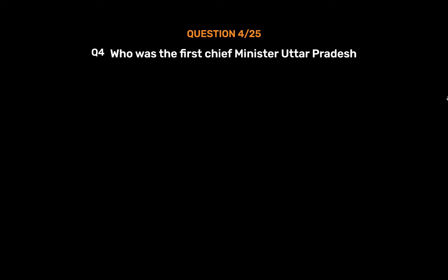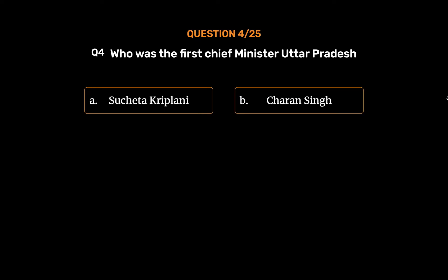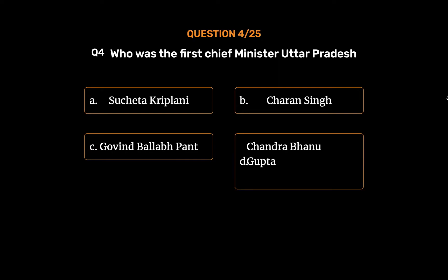Question No. 4: Who was the first Chief Minister of Uttar Pradesh? Option A: Sucheta Kriplani. Option B: Charan Singh. Option C: Govind Vallabh Pant. Option D: Chandrabhanu Gupta. The correct answer is Option C: Govind Vallabh Pant.